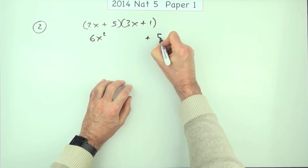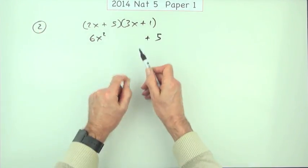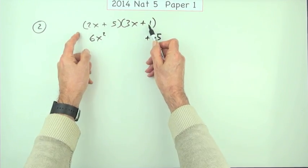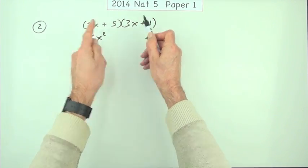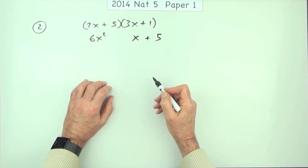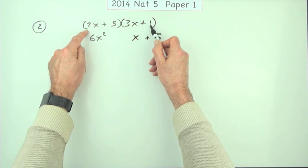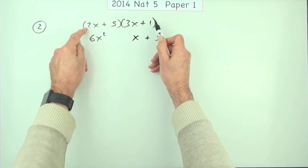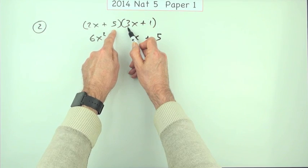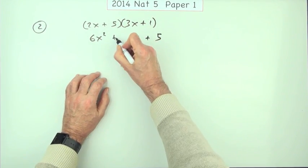The last times the last, plus 5. Then the two mixtures, the inner plus the outer, or if you like, the outer plus the inner. You know they're going to be x's, I'll put that down first. Now it's just the numbers. You've got a 2 times 1 is 2, and a 5 times 3 is 15. So you've got a 2 and a 15, which makes 17.